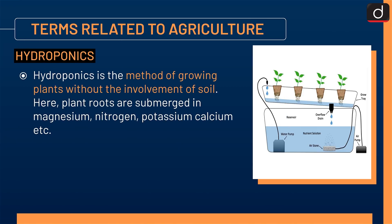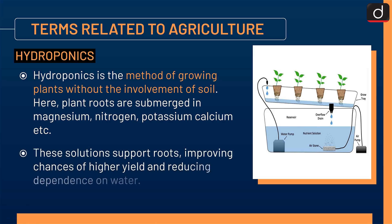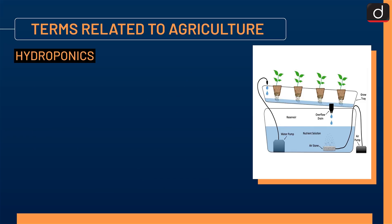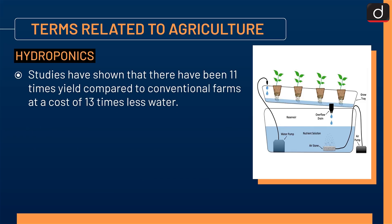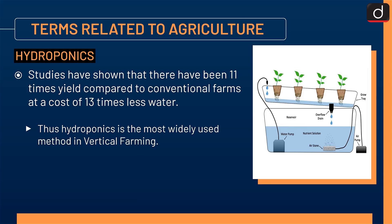Hydroponics is the method of growing plants without the involvement of soil. Plant roots are submerged in solutions containing magnesium, nitrogen, potassium, calcium, etc. These solutions support roots, improving chances of higher yield and reducing dependence on water. Studies have shown 11 times the yield compared to conventional farms at 13 times less water usage. Thus, hydroponics is the most widely used method in vertical farming.